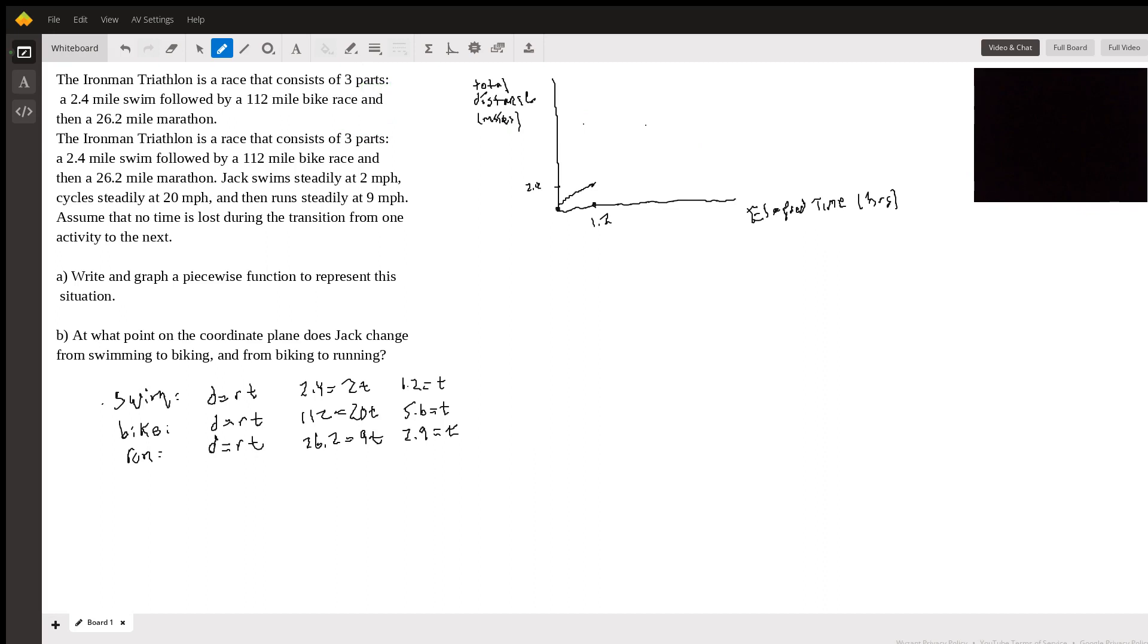Maybe I should change color. We started with swimming. Now he's going to be biking. So for biking, he's going to be traveling for another 5.6 hours. So it's a pretty big jump here. Now 5.6 plus 1.2 is 6.8. So I'm going to put 6.8 here. And now the total distance traveled, you can see, is going to be 2.4 plus 112. So that's 114.4. And I'm not going to be able to draw this to scale. 114.4. So that's going to be here. So this is the biking.